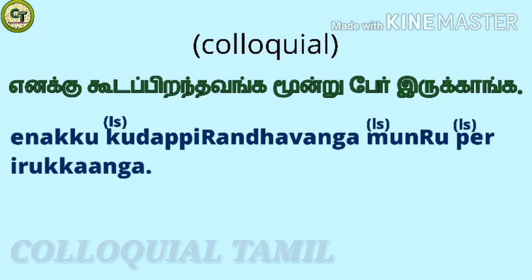The colloquial form is — 'I have three siblings.' You already know all these words. So one more time: 'I have three siblings.'